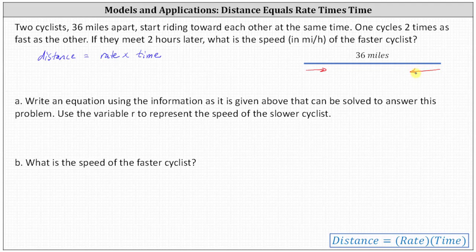The rate of the slower cyclist is R miles per hour. Let's label this arrow R for the rate in miles per hour of the slower cyclist. And because the faster cyclist is traveling twice as fast, the faster cyclist is traveling 2R miles per hour. And again, because they're traveling toward each other, we'll be adding the products of the rates and times for the two cyclists.